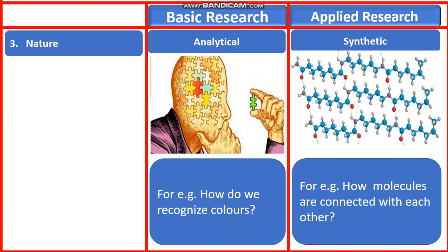The third point of the difference between basic research and applied research is the nature. Basic research has an analytical nature — for example, how do we recognize colors? We are analyzing something, the pattern of color, so it is an example of basic research. Whereas the nature of applied research is synthetic — for example, how molecules are connected with each other. When we are trying to give an answer to such questions, we are actually doing applied research.